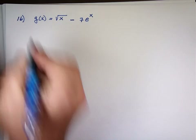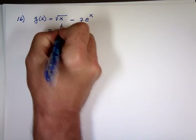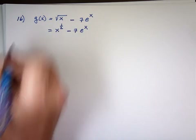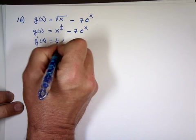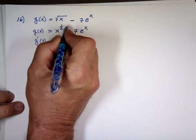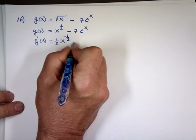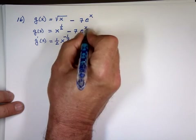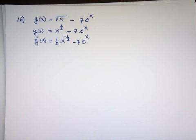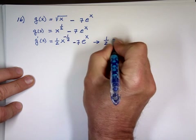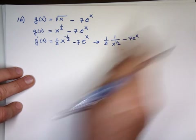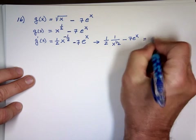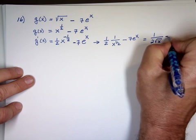The square root of x means x to the power of 1 half. So now we can find the derivative: take the power, which is 1 half, times x, and subtract 1 from the power — 1 half minus 1 is negative 1 half. That's 1 over 2 times x to the 1 half, which is 1 over the square root of x, minus 7e to the x.